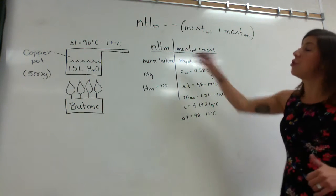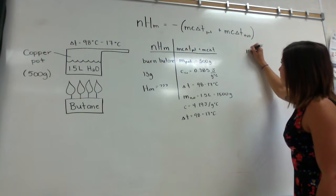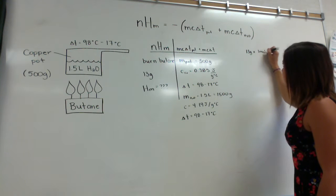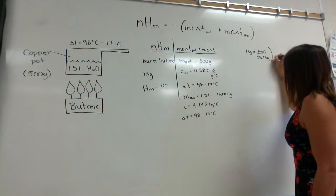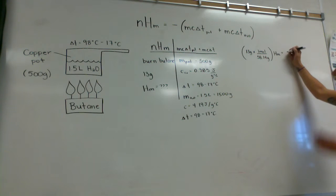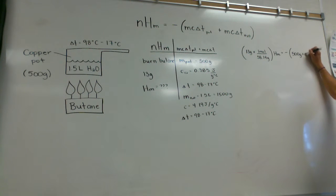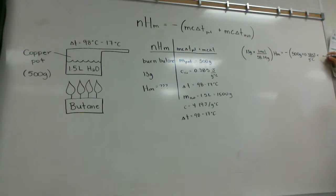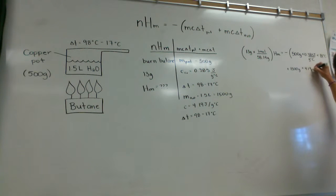You're going to plug it into the new formula: NHM equals negative MC delta T of the pot plus MC delta T of the water. Take 13 grams and convert to moles using the molar mass of butane, which is 58.14, and leave HM because that's what we're solving for. Use the negative outside the brackets, then multiply the heat capacity of copper by the mass of the copper pot, multiplied by the temperature change of 81 degrees Celsius. Add to it 1,500 grams of water multiplied by 4.19 joules per gram degree Celsius, multiplied by 81 degrees Celsius.